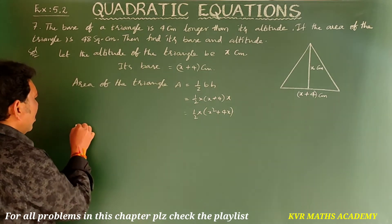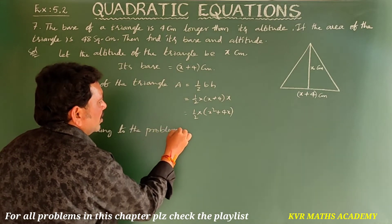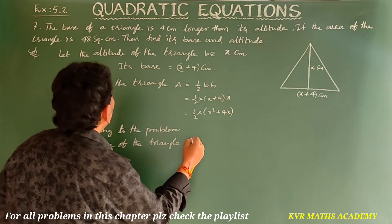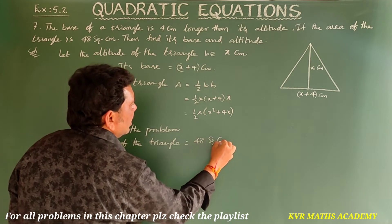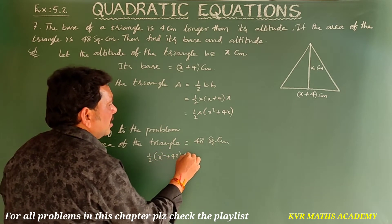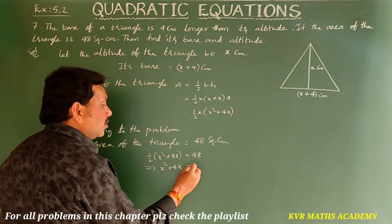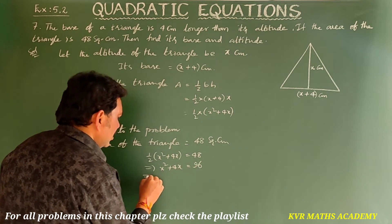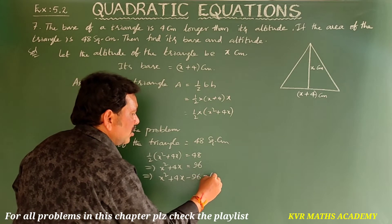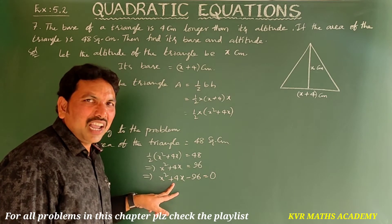According to the problem, the area of the triangle is 48 square centimeters. So: half times (x squared plus 4x) = 48, which gives x squared plus 4x = 96. Transferring to one side: x squared plus 4x minus 96 = 0. This is the required quadratic equation.